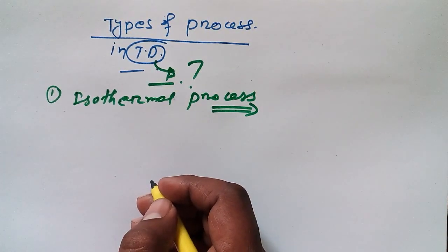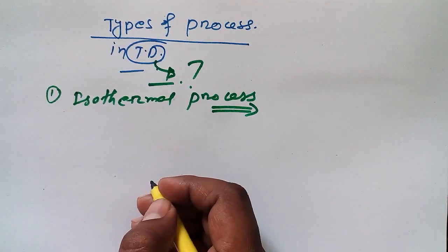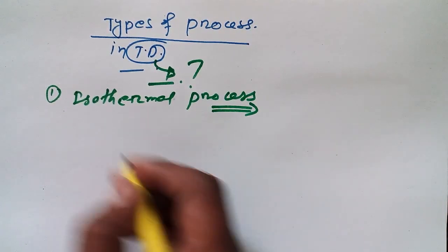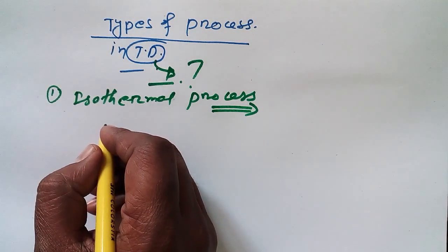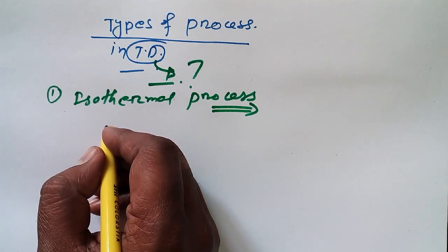I'm going to discuss five processes and I will provide you tips and tricks to remember all those processes. So what is isothermal process? Well, this is a process where there is no change in temperature if the system is changing from one place to another place.